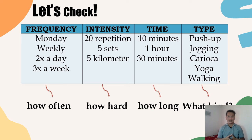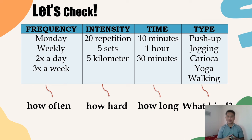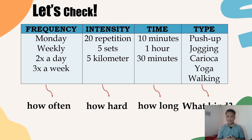Intensity includes training repetition, five sets, or five kilometers, because intensity refers to how hard you execute or perform the activity. Time includes ten minutes, one hour, and thirty minutes, because this refers to how long you are going to perform such activity.